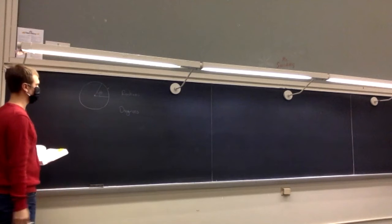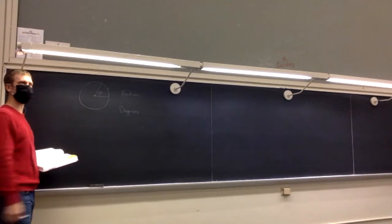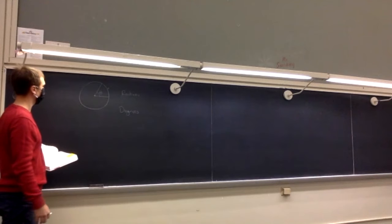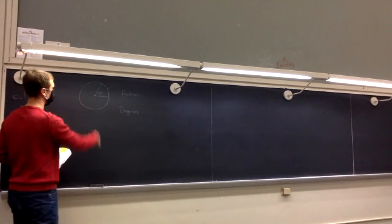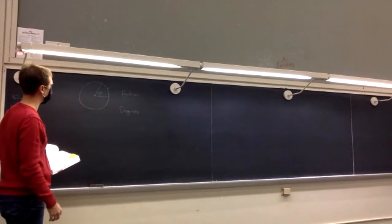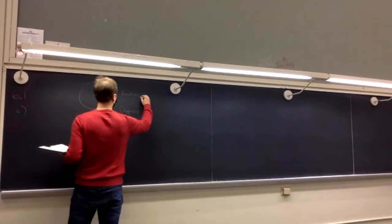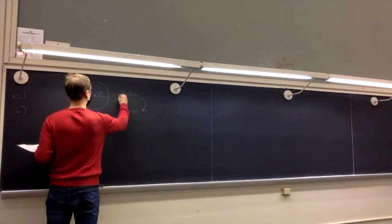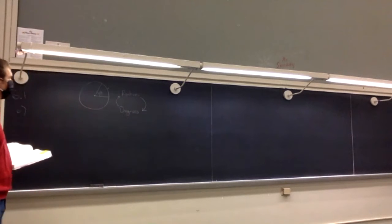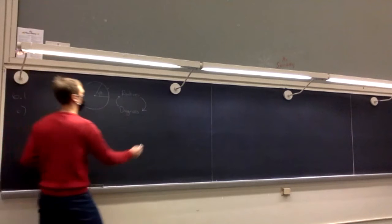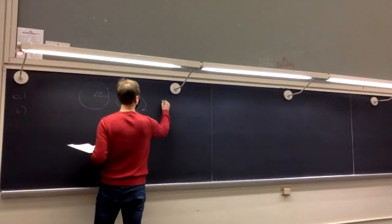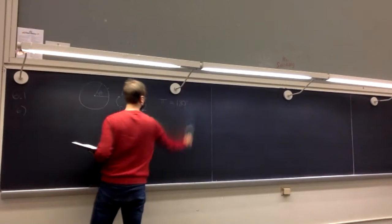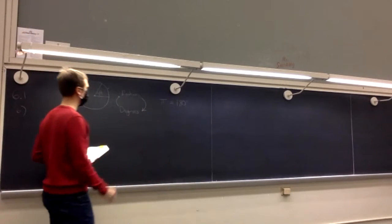Radians have to deal with this arc length — how long that is in terms of the radius of the circle. Degrees are more arbitrary; going all the way around a circle is about 360 of these things, measuring how many slices we've got. The key idea for converting back and forth is that π radians equals 180 degrees.